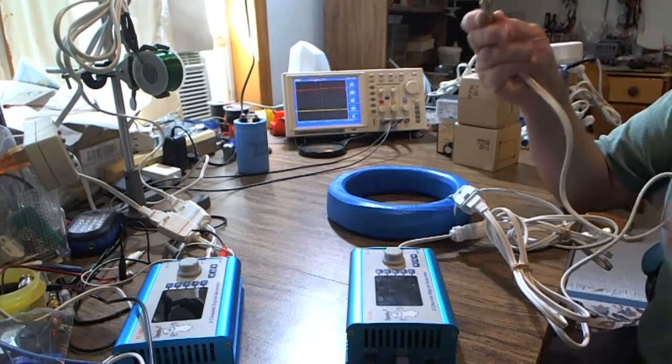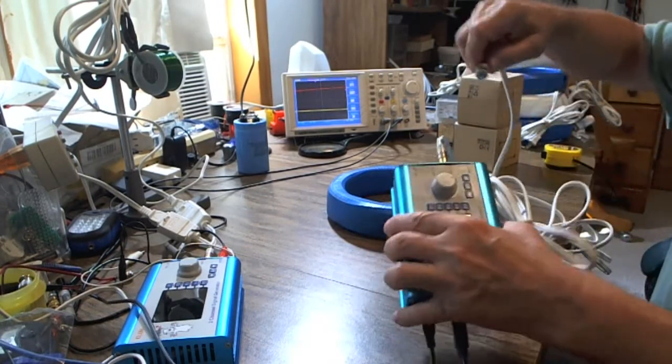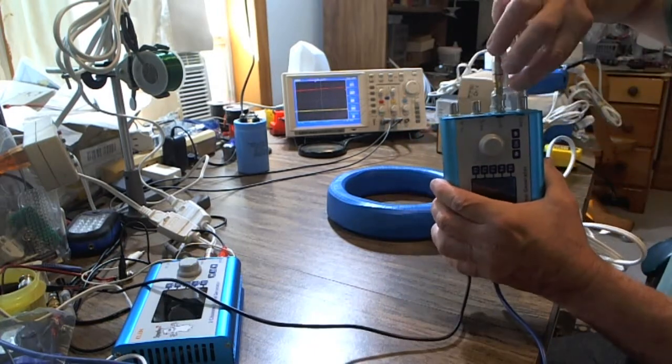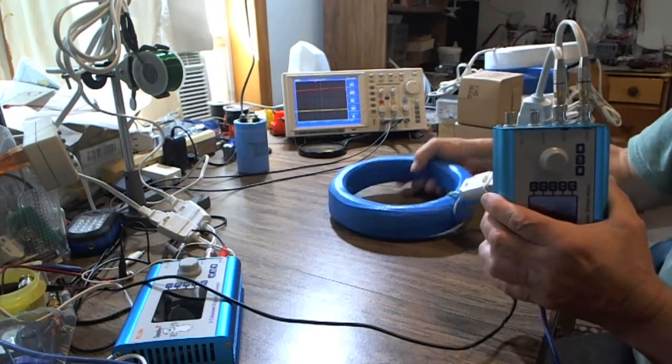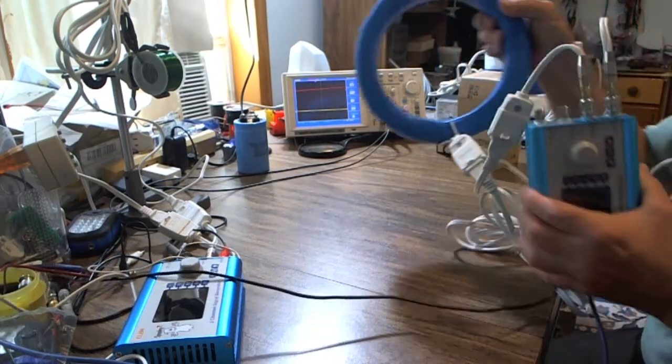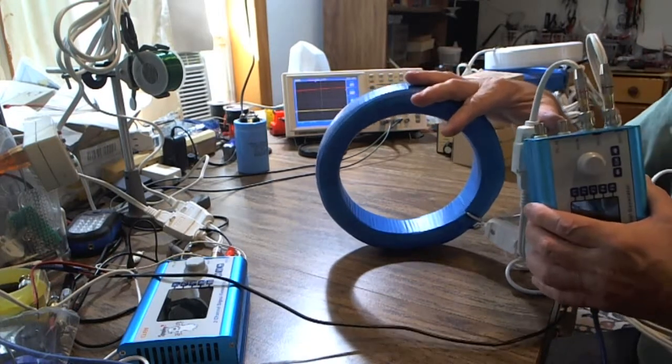And again, it has an RCA phono running to a BNC converter so it also will plug in directly to the spooky channel. So now you have a bi-filler coil with two windings in it connected to the two channels of the spooky.